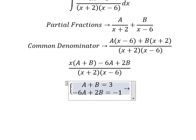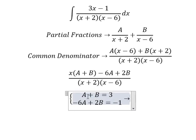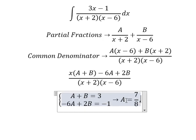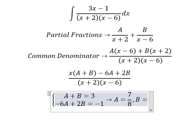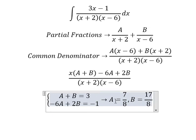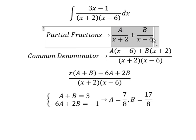And now we need to find the solutions of A and B. So A equals to 7 over 8, B equals to 17 over 8. And now I will put A and B going here.